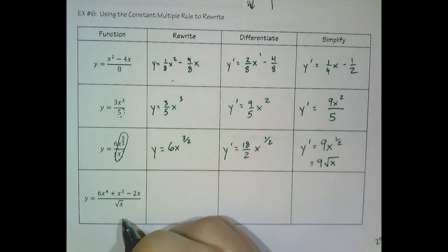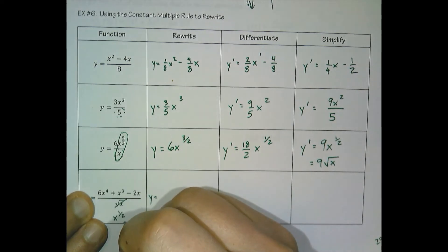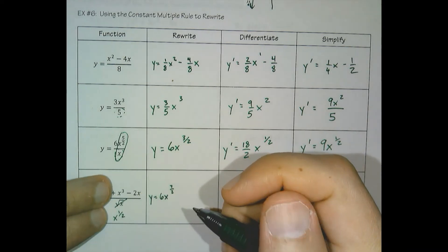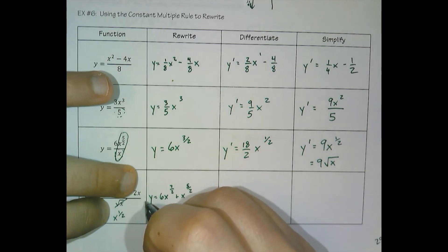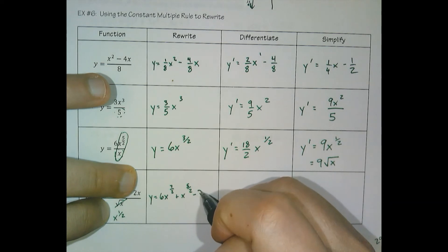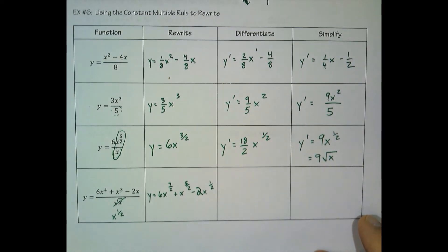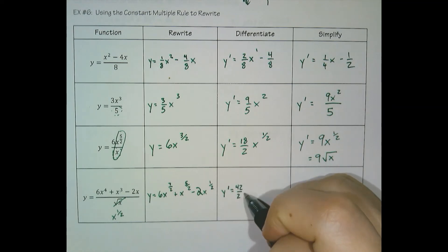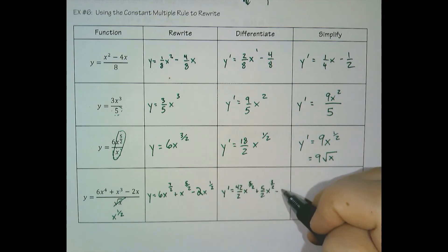Same thing here — our denominator of x to the 1 half is just a singular term denominator, so we don't have to do the quotient rule. We can simplify: x to the 4th over x to the 1 half is x to the 7 halves; x to the 3rd over x to the 1 half is x to the 5 halves; and x over x to the 1 half is x to the 1 half. We just subtracted 1 half from each of these exponents. Now we can just apply the power rule: 42 halves x to the 5 halves plus 5 halves x to the 3 halves minus x to the negative 1 half.